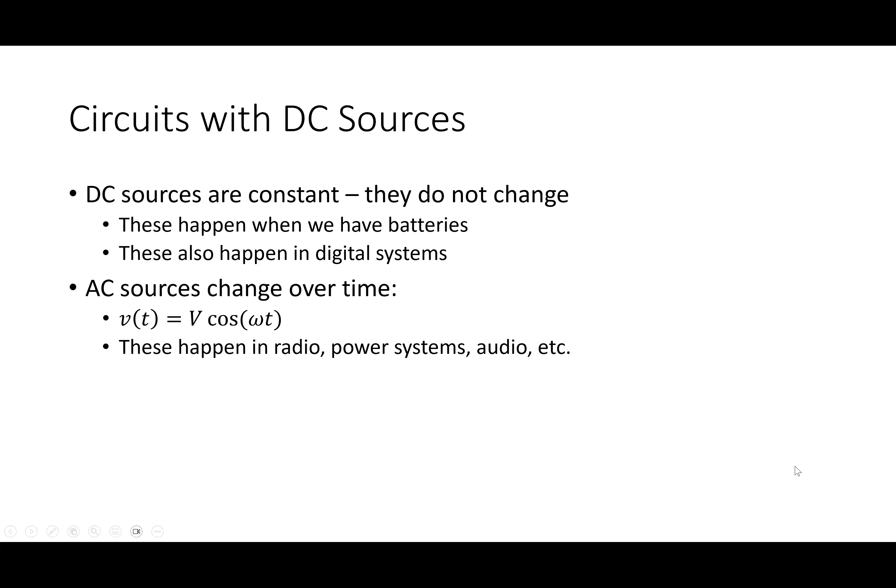Circuits 1 is all about DC sources. Circuits 2 is mainly about AC sources. The most common AC sources we deal with are sines and cosines, partly because any periodic waveform in the world can be thought of as a sum of sine waves. The power coming out of a wall socket looks sinusoidal. If you study radio or audio, you get into sinusoidal things.